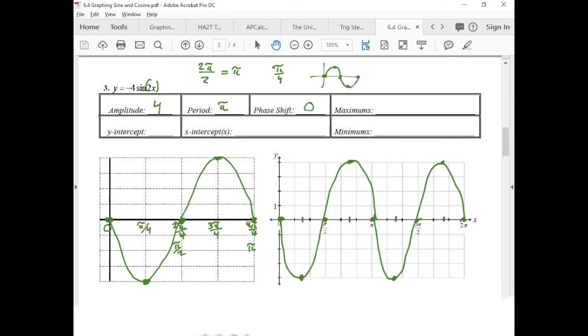All right, so let's write down our y-intercepts. We got 0. Now our x-intercepts, we have 0, π/2. Yeah, π/2. And then the next one is π. What's my next x-intercept? 3π/2. And then 2π. Okay, the next one, our maximums, they're all at 4, and our minimums are all at negative 4.